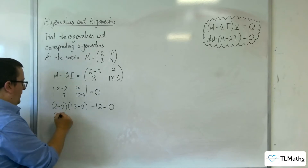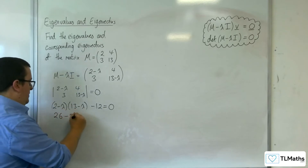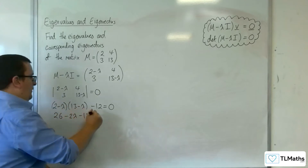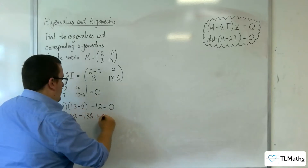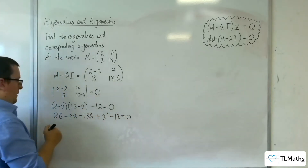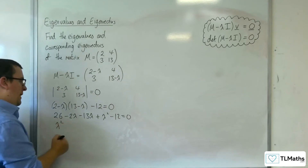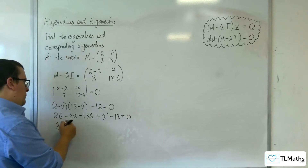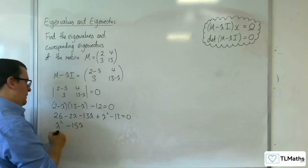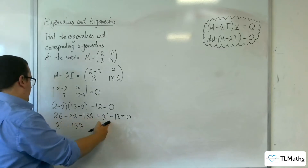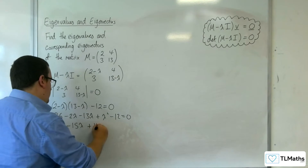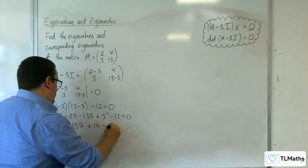Multiplying this out, we've got 26 take away 2 lambda, take away 13 lambda, plus lambda squared, take away 12 is 0. So lambda squared, we've got take away 15 lambda, then we've got 26 take away 12, so plus 14 equals 0.